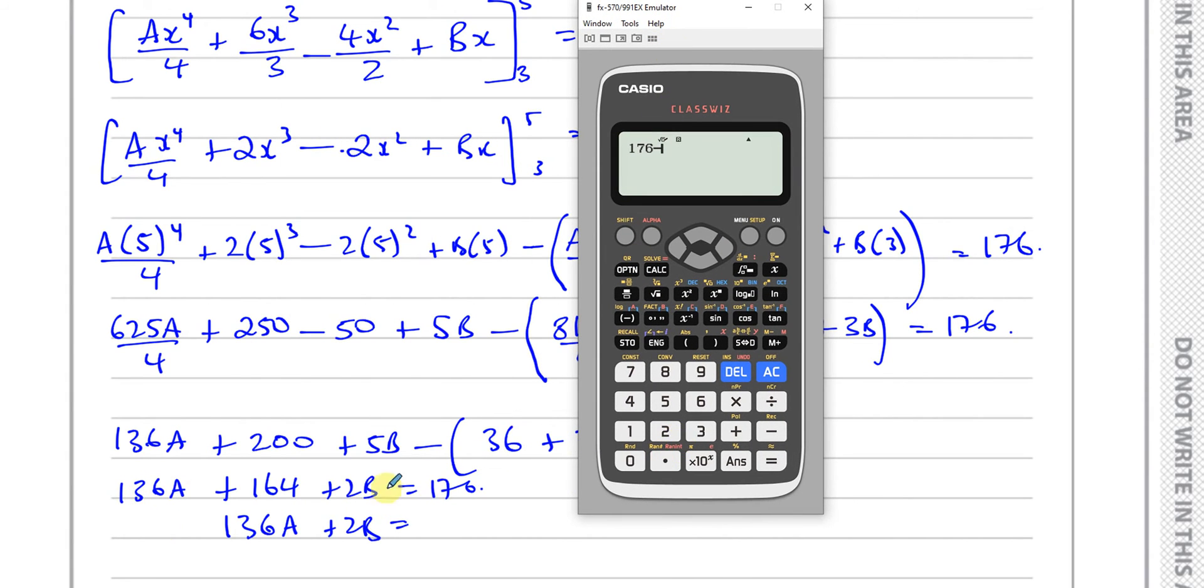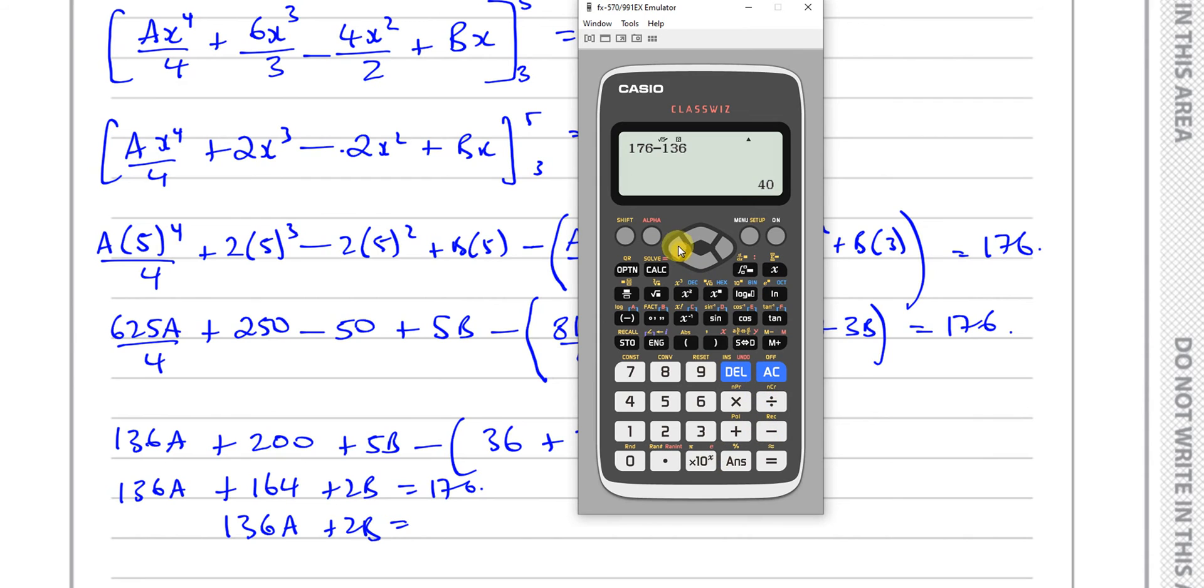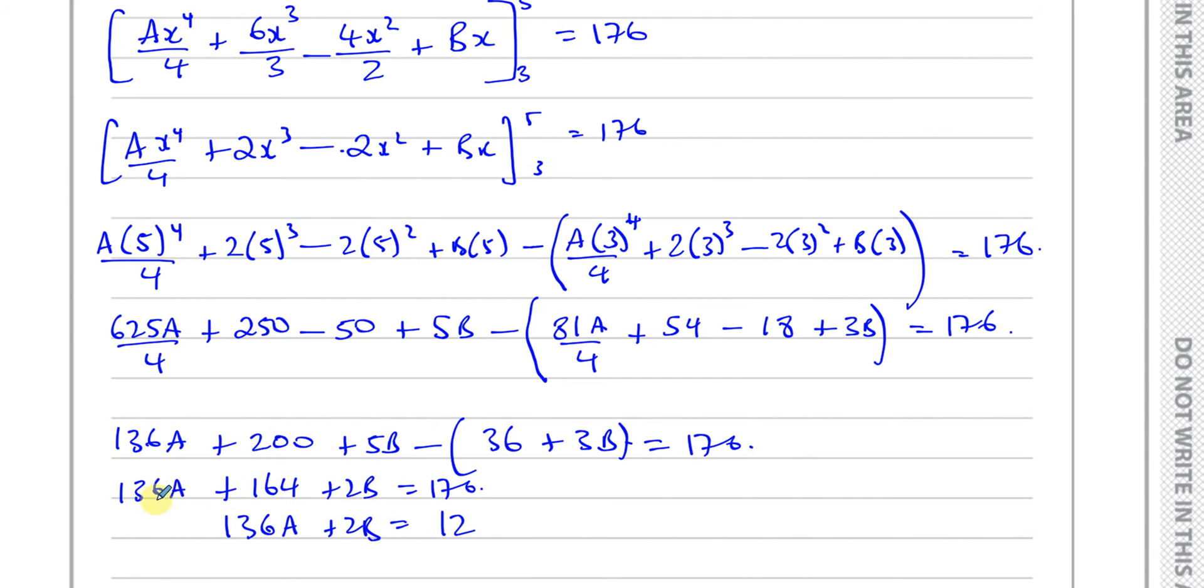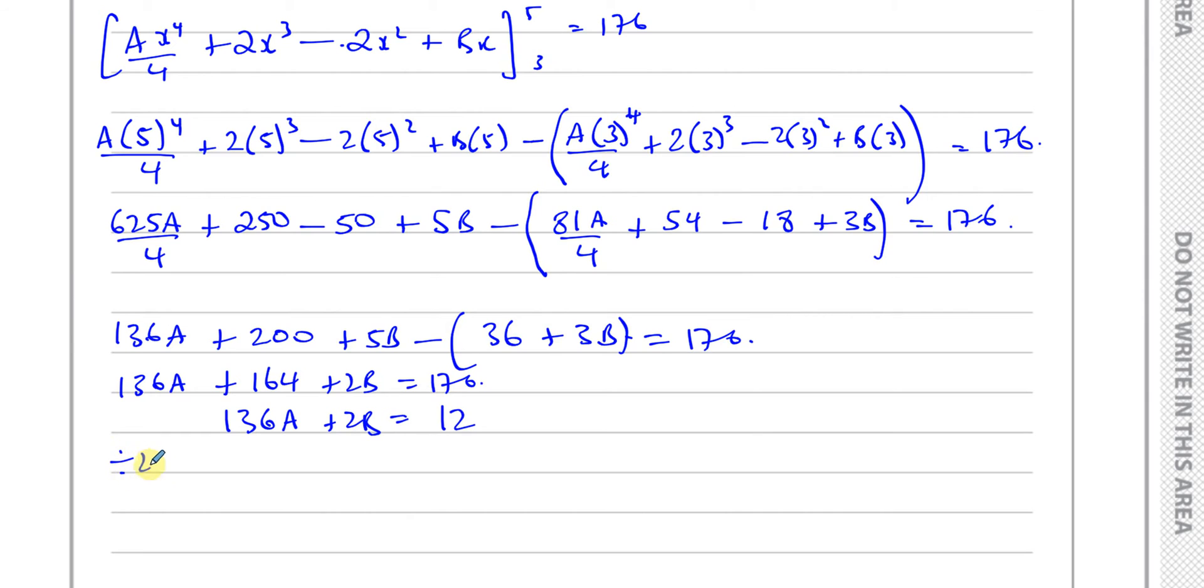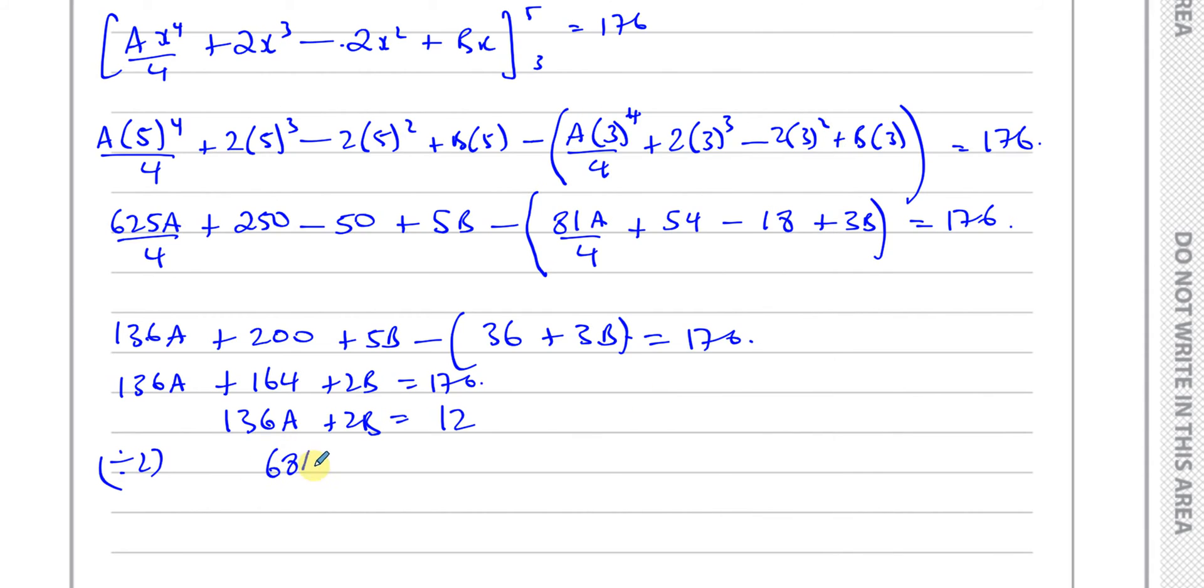So we got here 625a over 4 minus 81a over 4. 625 take away 81, divided by 4, that's 136a. Then we've got 250 minus 50 which is 200, plus 5b, minus 54 minus 18, which gives us 36. 136a, now I've got 200 minus 36, so 200 take away 36 is 164, so that's plus 164. 5b minus 3b is 2b equals 176. So 136a plus 2b equals 176 minus 164, which gives us 12. We can divide everything by 2. 136 divided by 2 gives us 68. So that's 68a plus b equals 6. So that's equation 2.